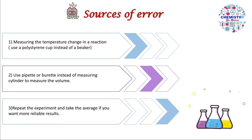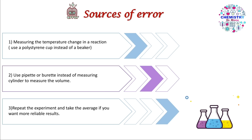Question 2 will also ask about sources of error and how to improve them. If measuring temperature change, use a polystyrene cup instead of a beaker — polystyrene is an insulator and minimizes heat loss. If measuring volume with a measuring cylinder, improve accuracy by using a pipette or burette instead. To obtain more reliable results, repeat the experiment and take the average of more than one trial.